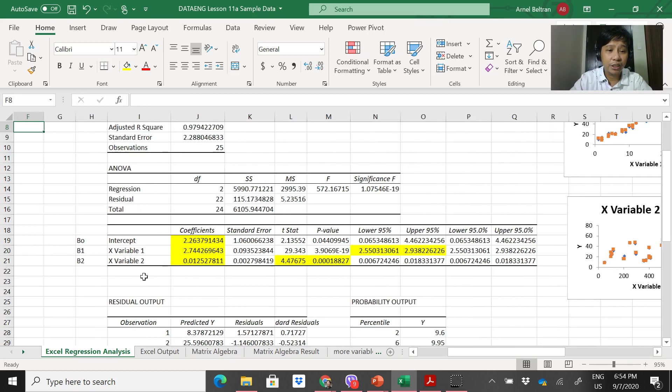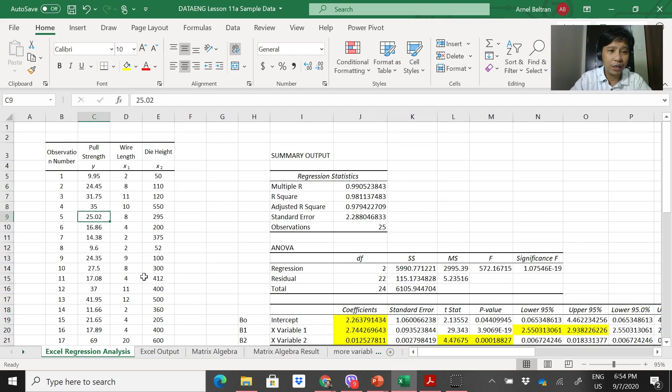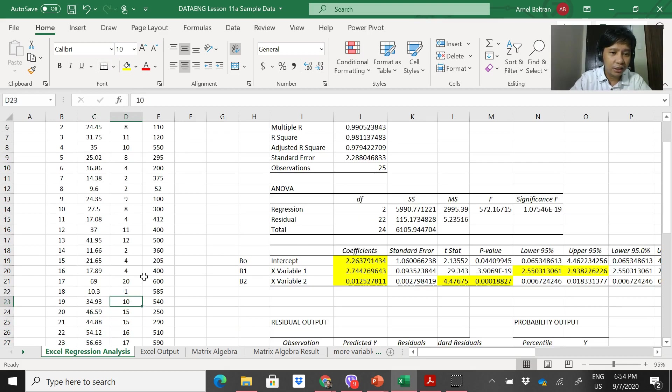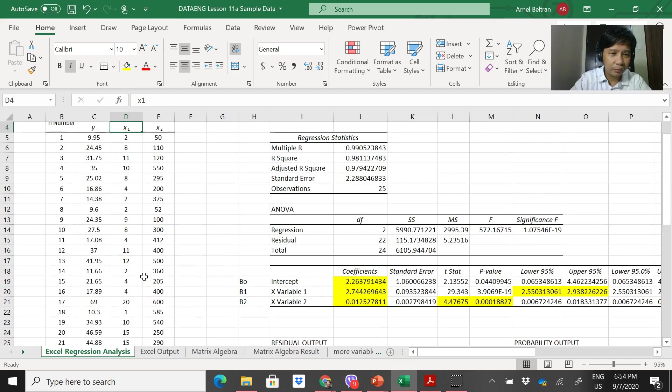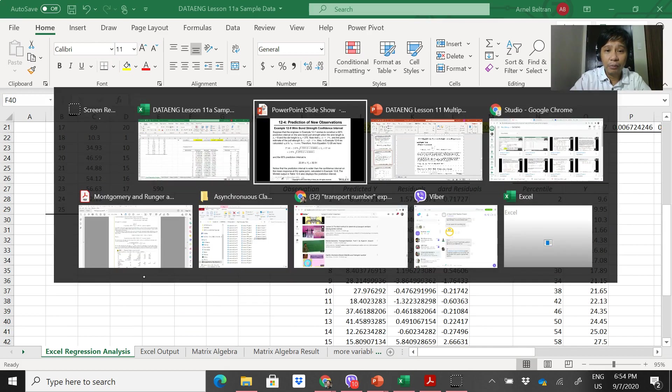What you need to get is how to do the prediction model. So from the model itself, you just substitute the value. For example, you have new data - 10, 10, what's not here...